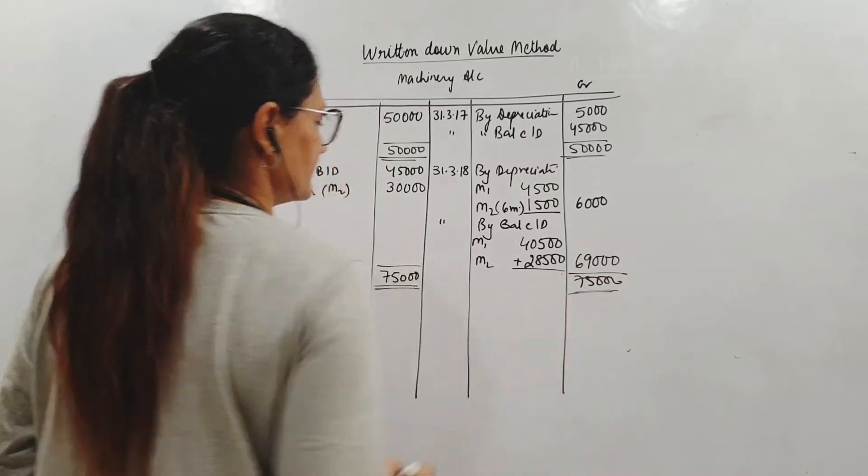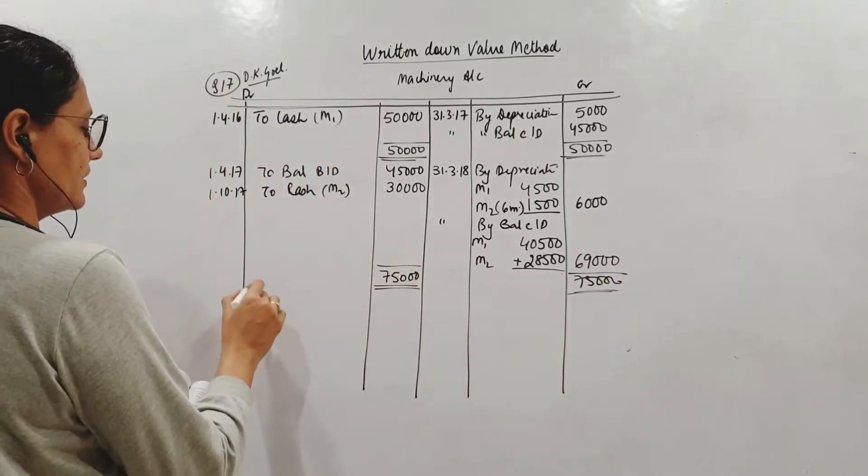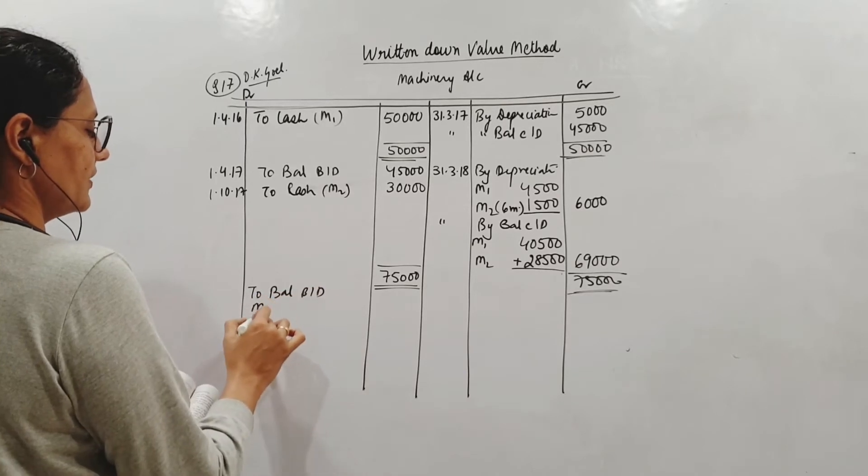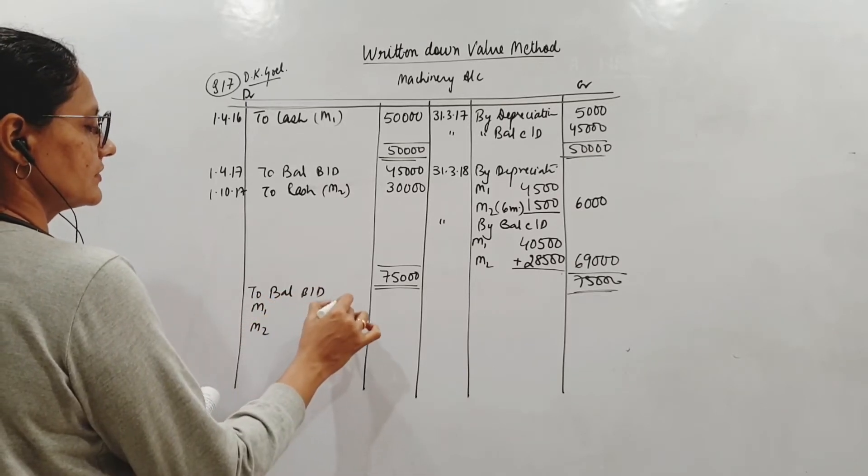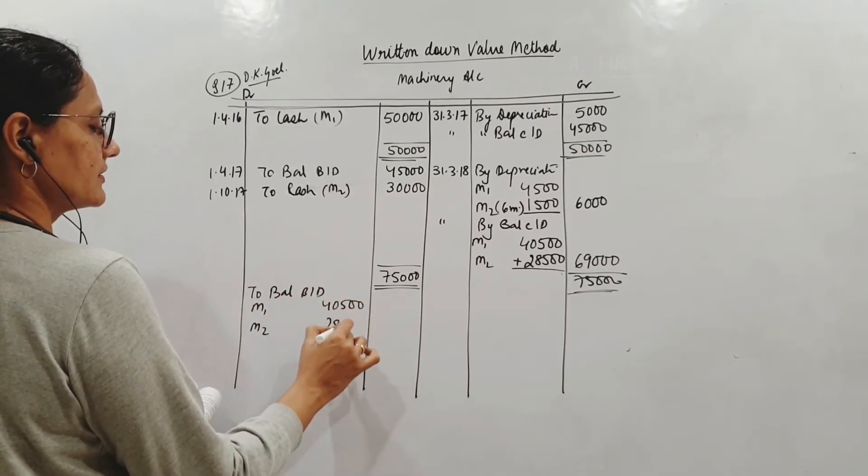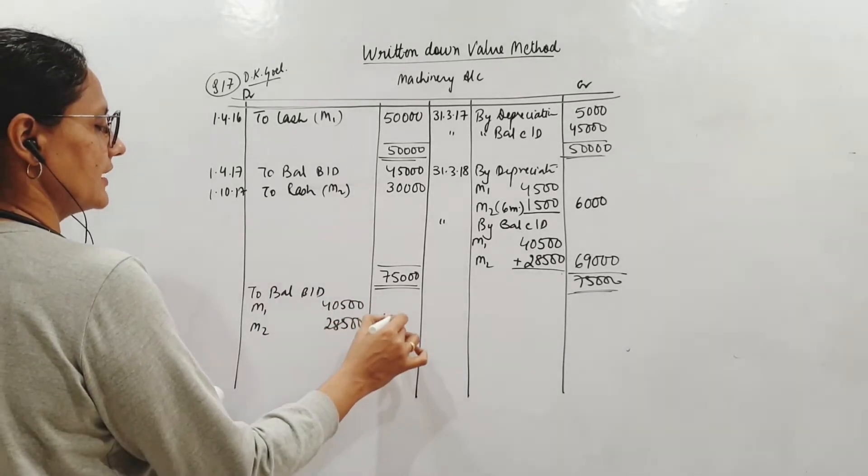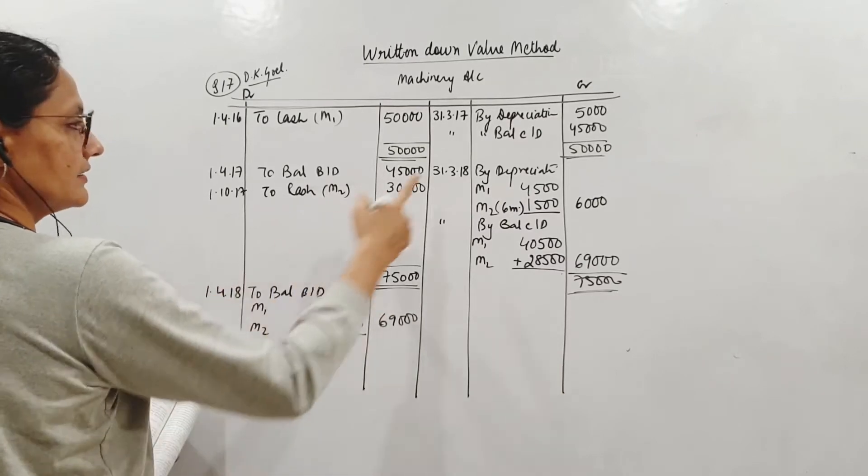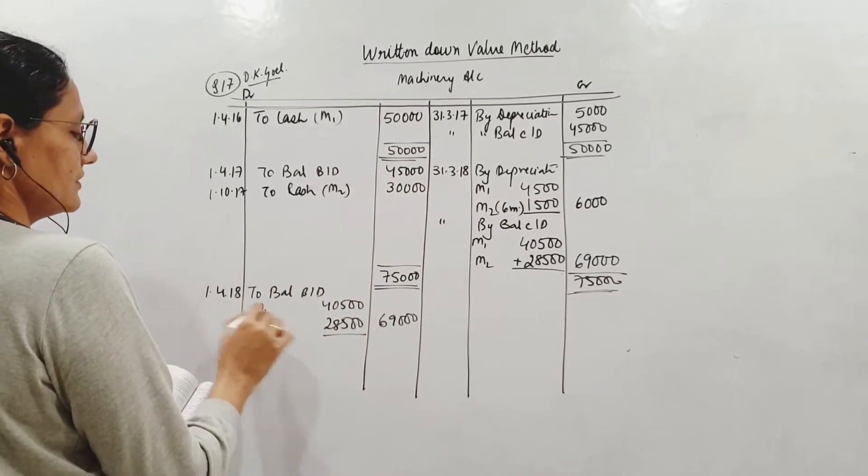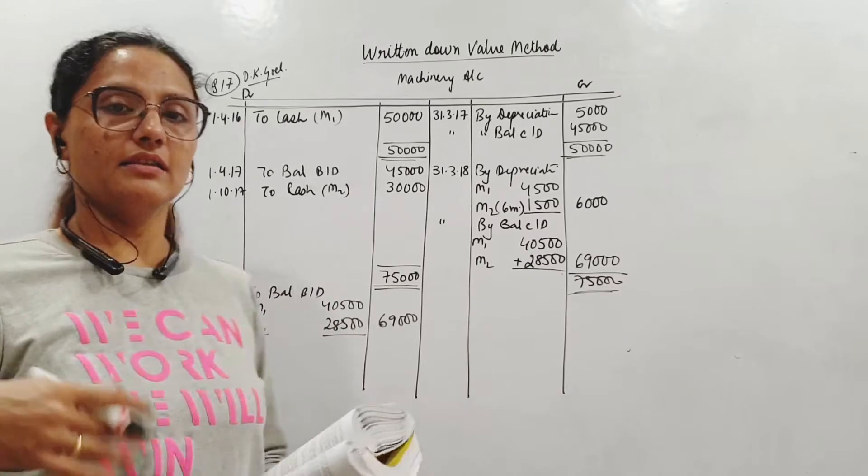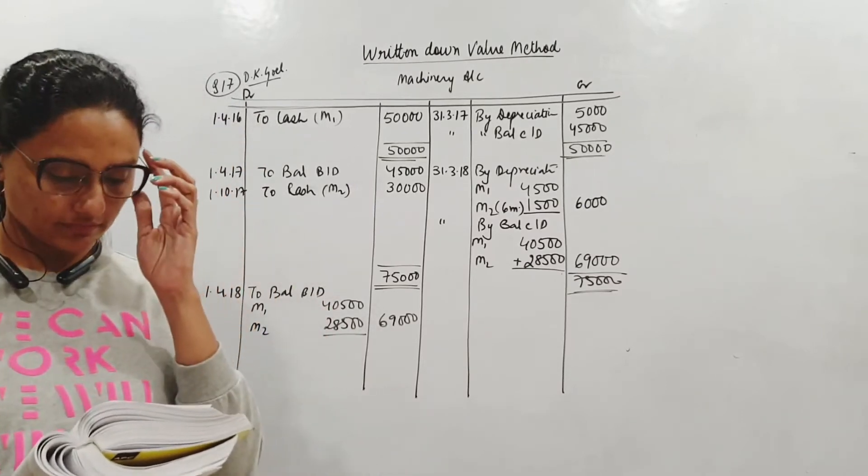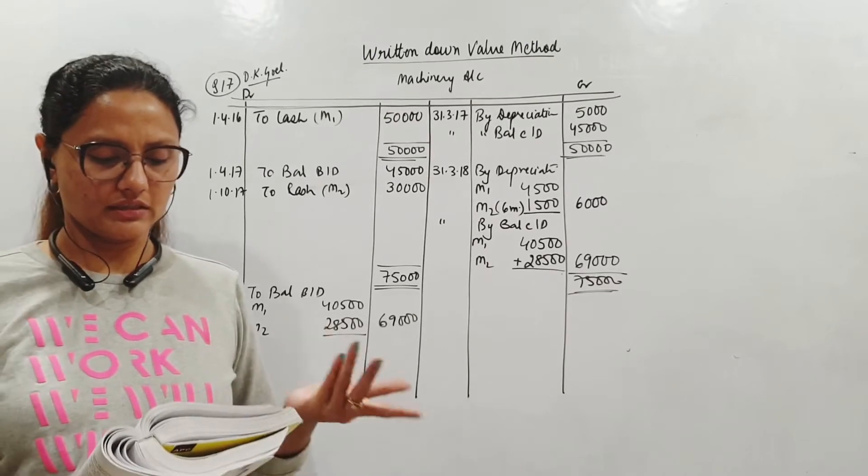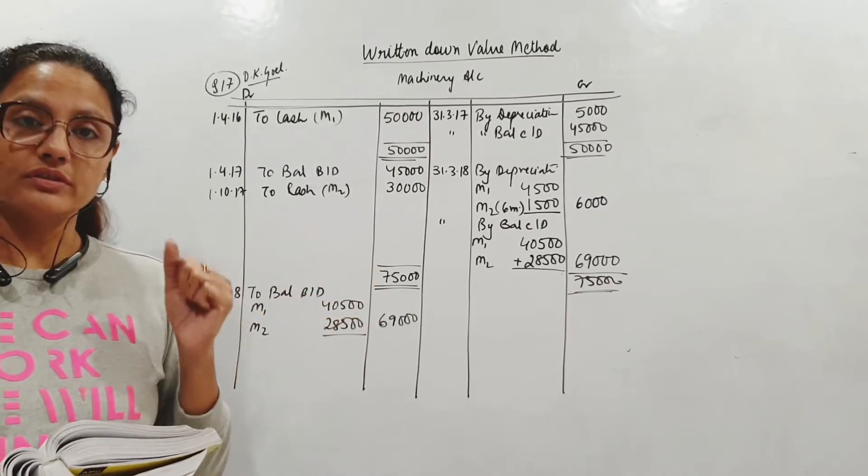When we bring down the balance and carry down the balances. I told you in the last class also. I prefer keeping them separate. Nothing wrong in merging it. But this is for our own convenience and easy calculation. 45,000 asset minus 4,500, written down value 40,500. 30,000 asset 1,500 depreciated, 28,500. So this is 69,000. That's the written down value of the asset.